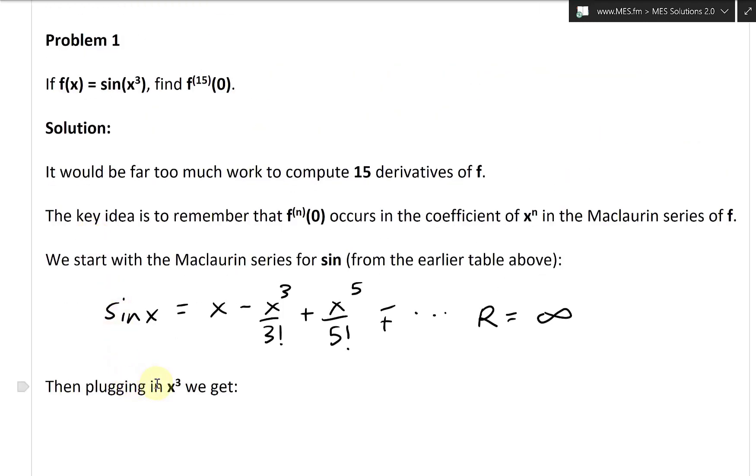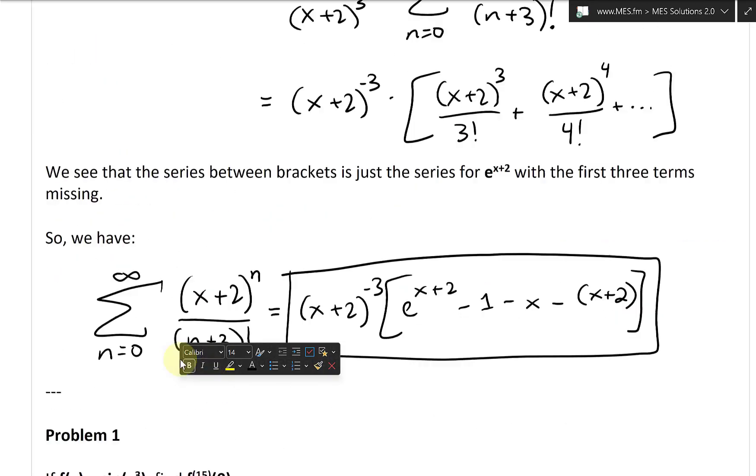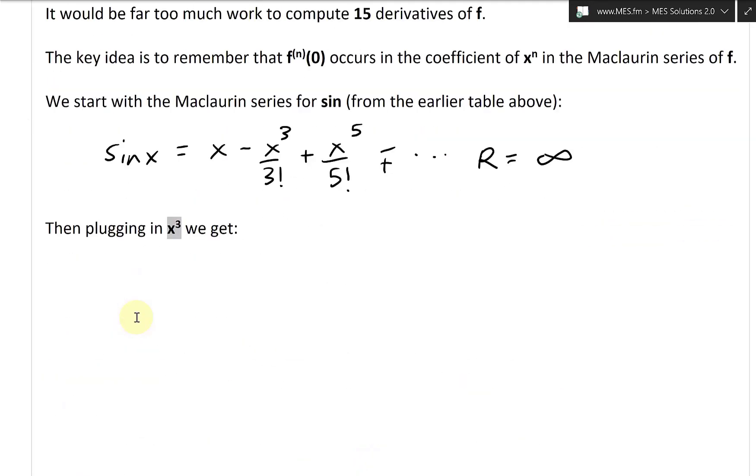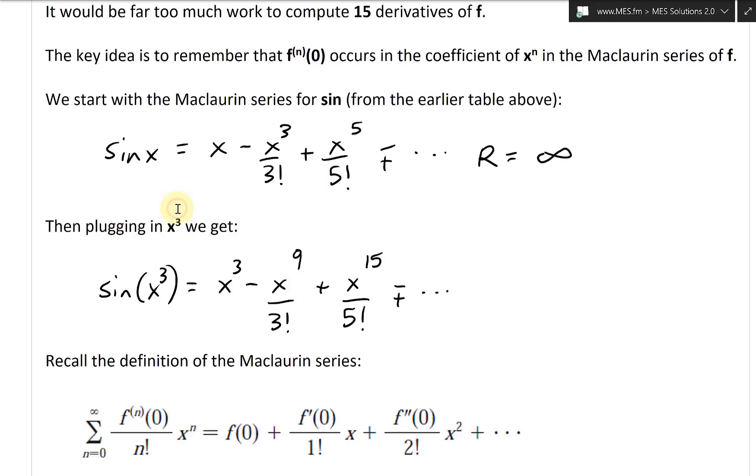So sine of x is equal to x minus x to the 3 over 3 factorial, plus x to the 5 over 5 factorial, and it keeps going on minus plus, dot dot dot, and r is equal to infinity. For all x it converges. All right, so now in our case, we're going to be plugging in x to the power of 3 because we have the sine x cubed there.